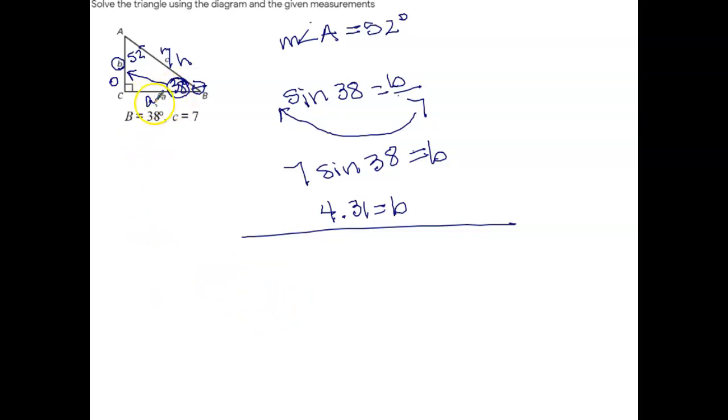To find a, you would have to use the adjacent over the hypotenuse. So you would be doing cosine of 38 is equal to a over 7. And so again, you're moving the 7 out front here. You're just multiplying both sides by 7 to get rid of this here. So you'd have 7 times the cosine of 38 is equal to a. And so when you take 7 times the cosine of 38, you get 5.52 is equal to a.